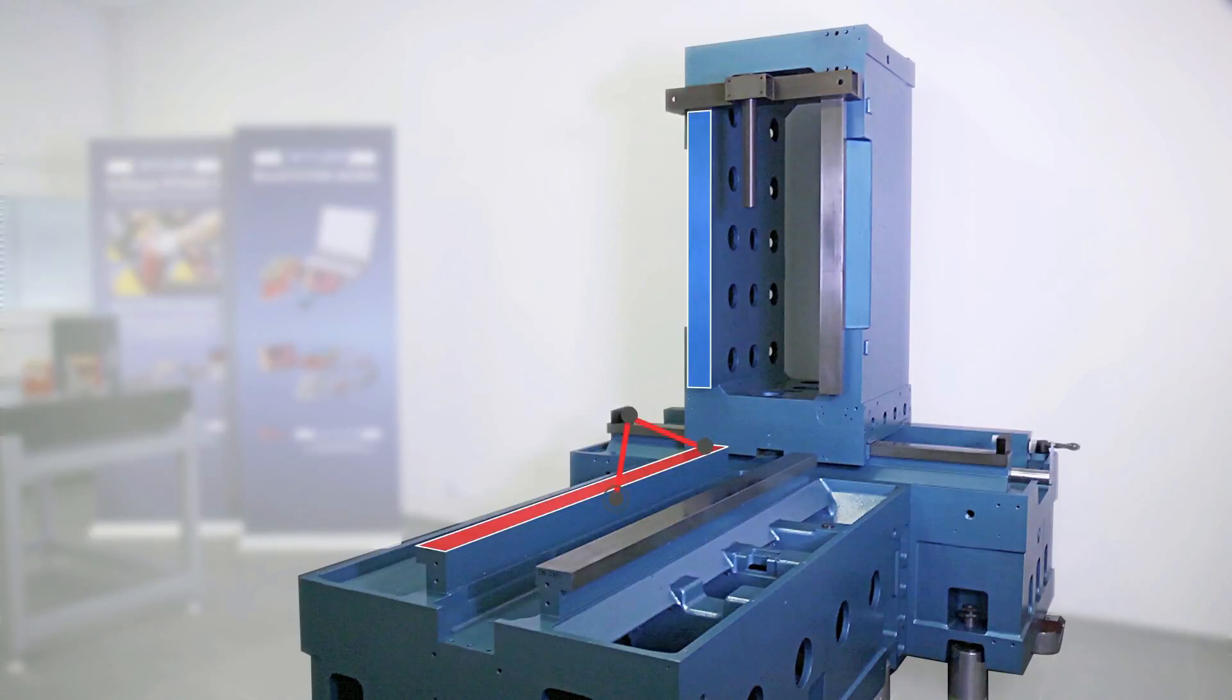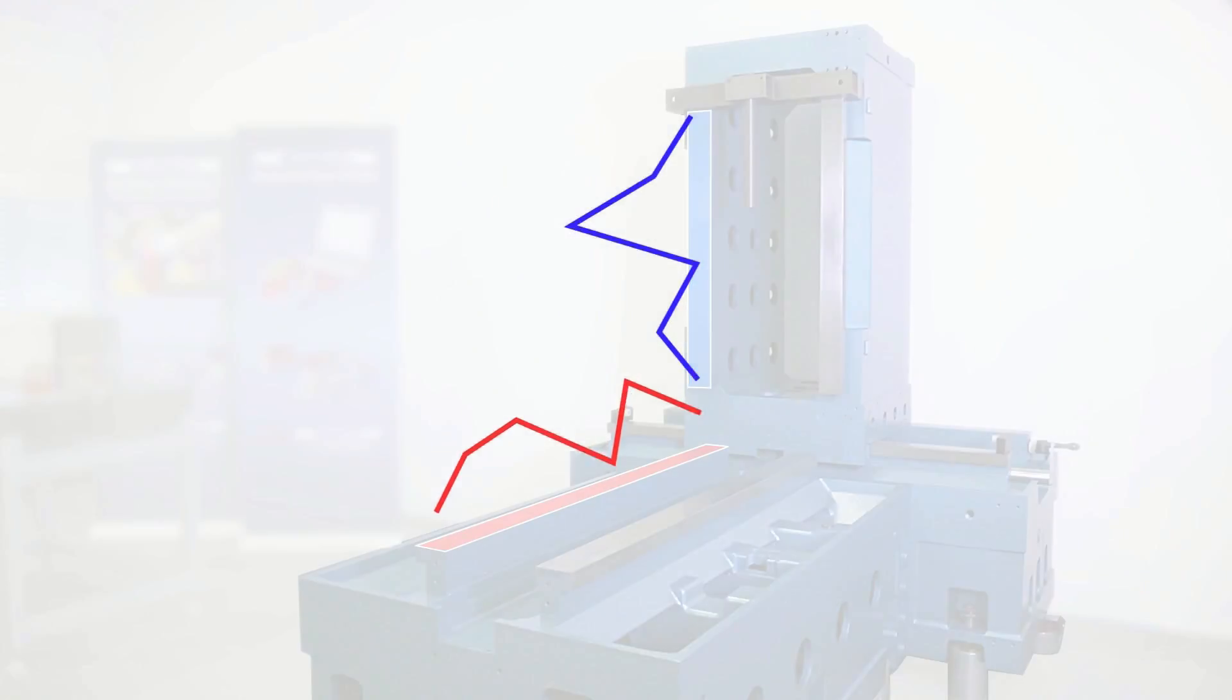First, you measure a reference line, here on the red horizontal guideway. And afterwards, a line on the blue vertical guideway. In our example, the measured values of the reference line on the red horizontal guideway are aligned according to endpoints.